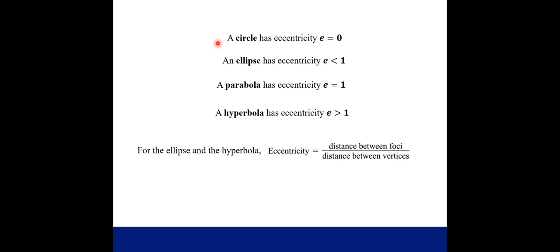So depending on the number you get when you calculate the eccentricity, you're going to have the following results. A circle has eccentricity zero, an ellipse has an eccentricity less than one but more than zero. So if your eccentricity is exactly one, that's a parabola. And if the eccentricity is greater than one, that's a hyperbola. And just a quick note about ellipses and hyperbolas, the eccentricity is just the ratio of the distance between the foci divided by the distance between the vertices.